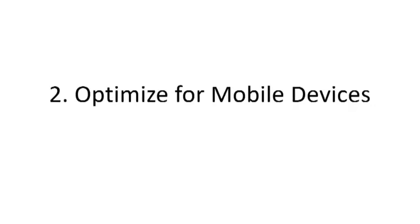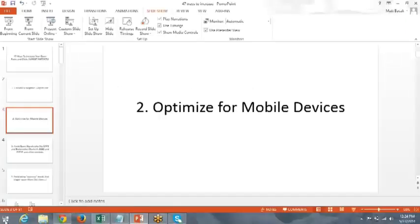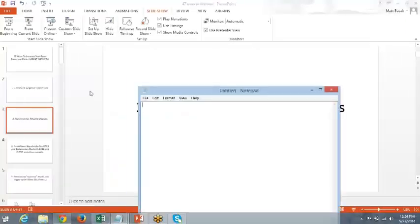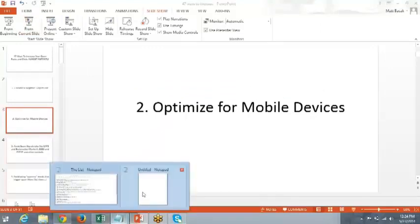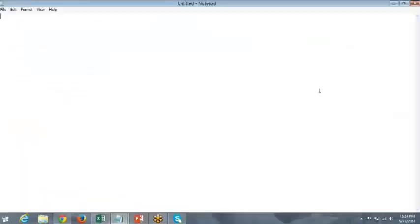Number two is optimizing for mobile devices. A lot of times when you're going into your accounts nowadays, there is a way to get a view of what the email is going to look like. When I'm saying optimizing for mobile devices, I'm typically talking about your subject line — making sure it's short and readable on a phone — and making sure your text doesn't go all the way across the screen.